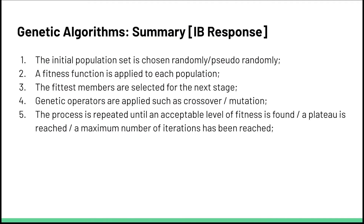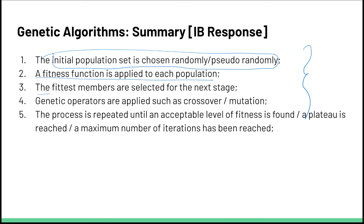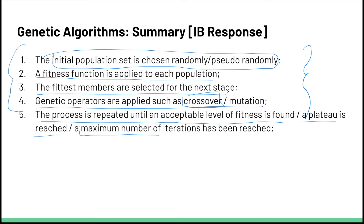To summarize genetic algorithms according to the IB exam — taken directly from an IB mark scheme — a genetic algorithm is a process where the initial population set is chosen randomly or pseudorandomly. A fitness function is applied to each population member. The fittest members are selected for the next stage, replacing the initial population. Genetic operators are applied: crossover, which is the exchange of bits or parts of a chromosome, and mutation, the exchange of individual bits or parts of a solution. This process is repeated until an acceptable level of fitness is found, a plateau is reached, or a maximum number of iterations is hit.